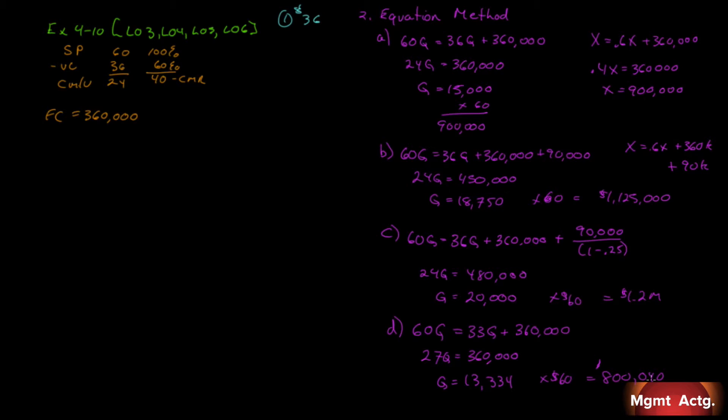Number three, repeat number two using the formula method. All right. So number three, A. We need our break-even in dollars and in units. So we know that our break-even is fixed cost over our contribution margin ratio and our fixed cost over our contribution margin per unit.